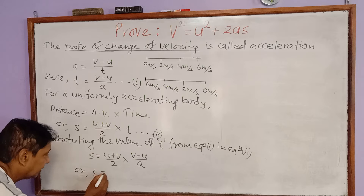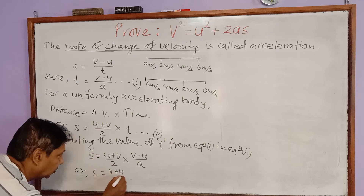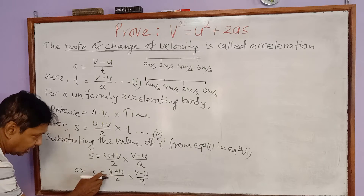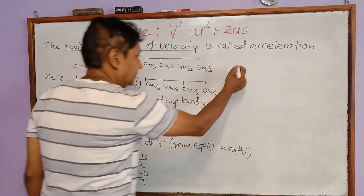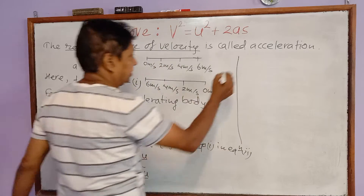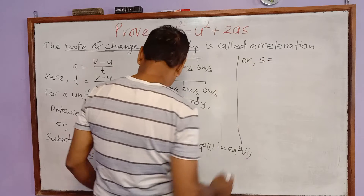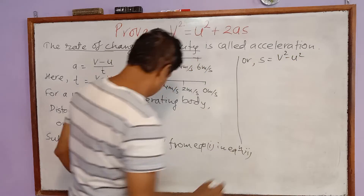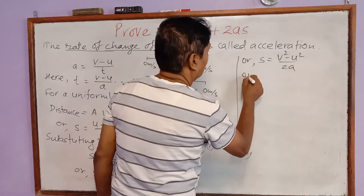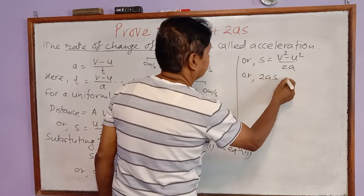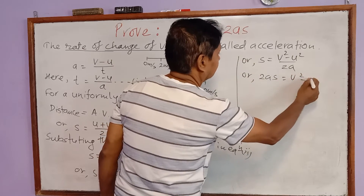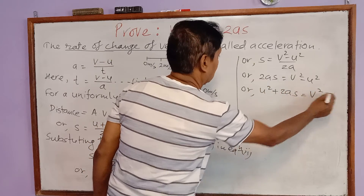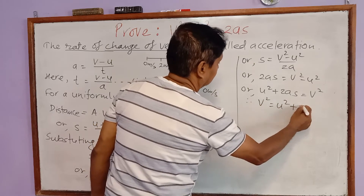Rearranging, we have S equals v plus u divided by 2, multiplied by v minus u divided by a. Using the identity (v + u)(v − u) equals v squared minus u squared, we get S equals v squared minus u squared divided by 2a. Taking 2a to the left-hand side gives 2aS equals v squared minus u squared, and rearranging gives v squared equals u squared plus 2as.